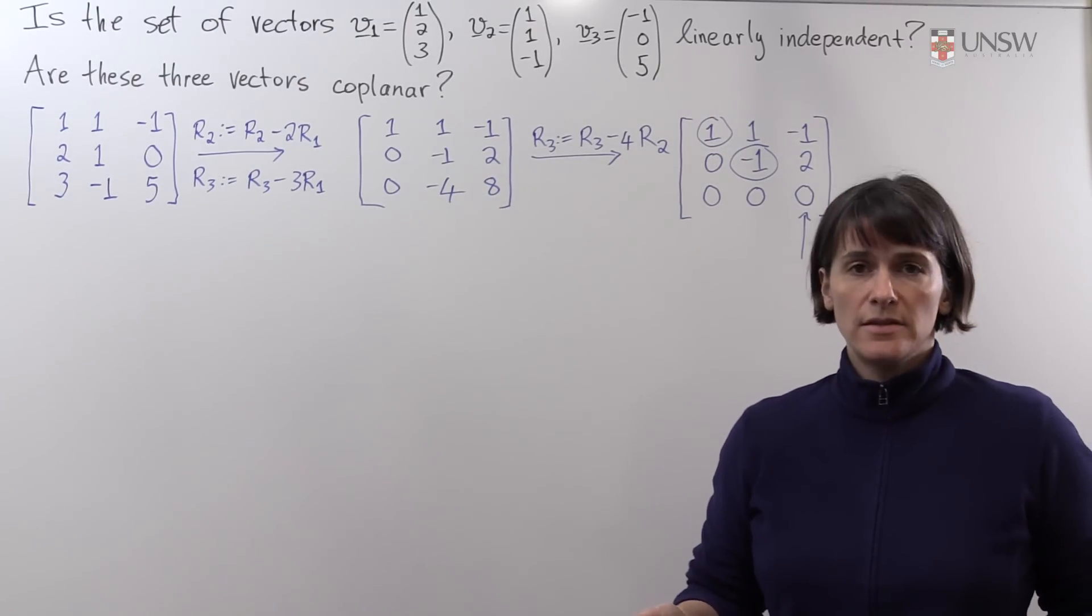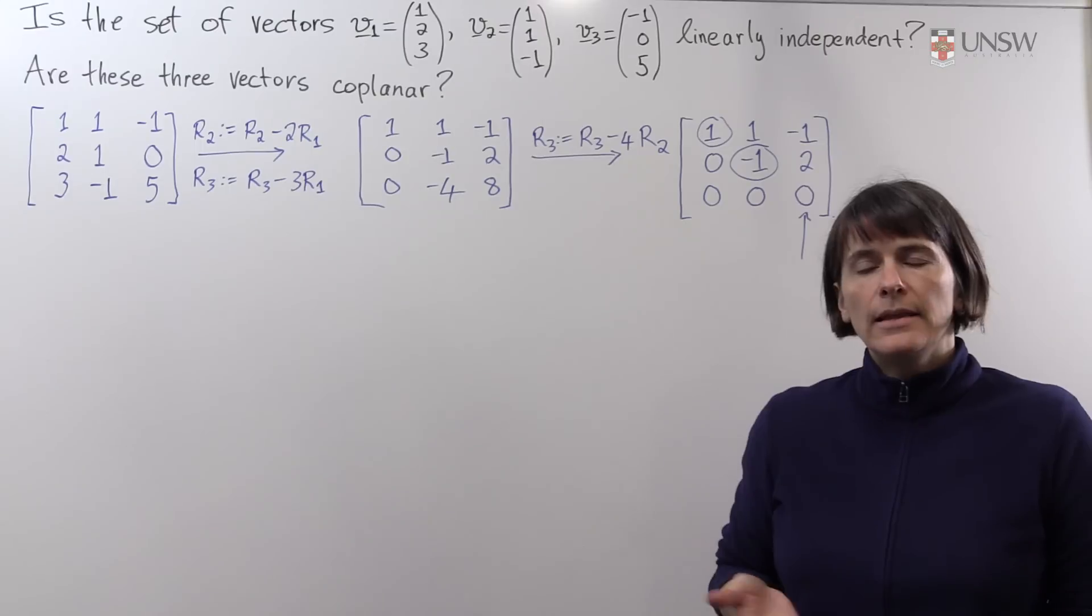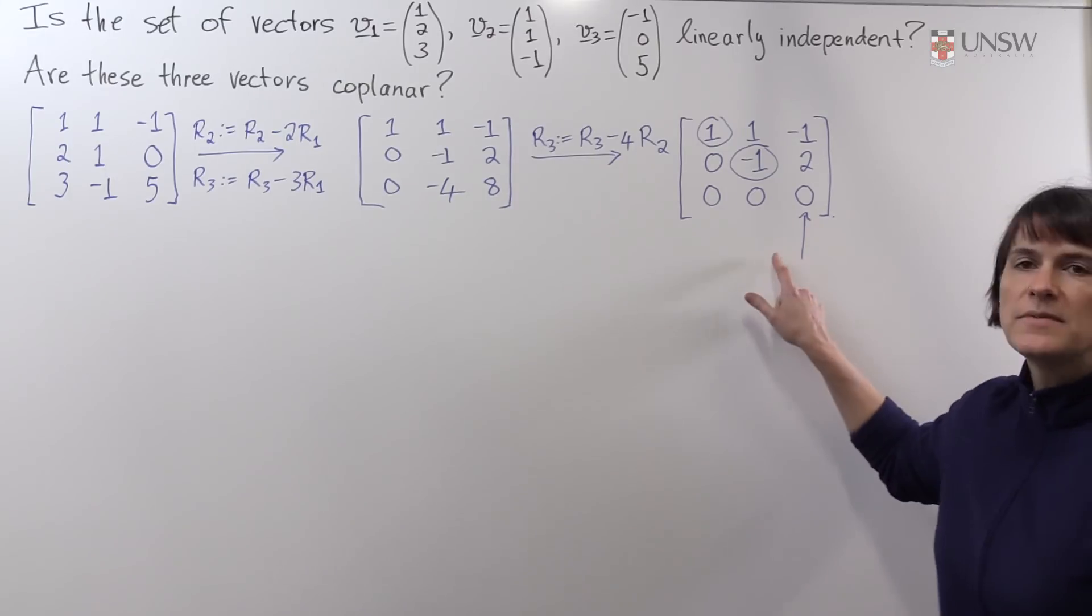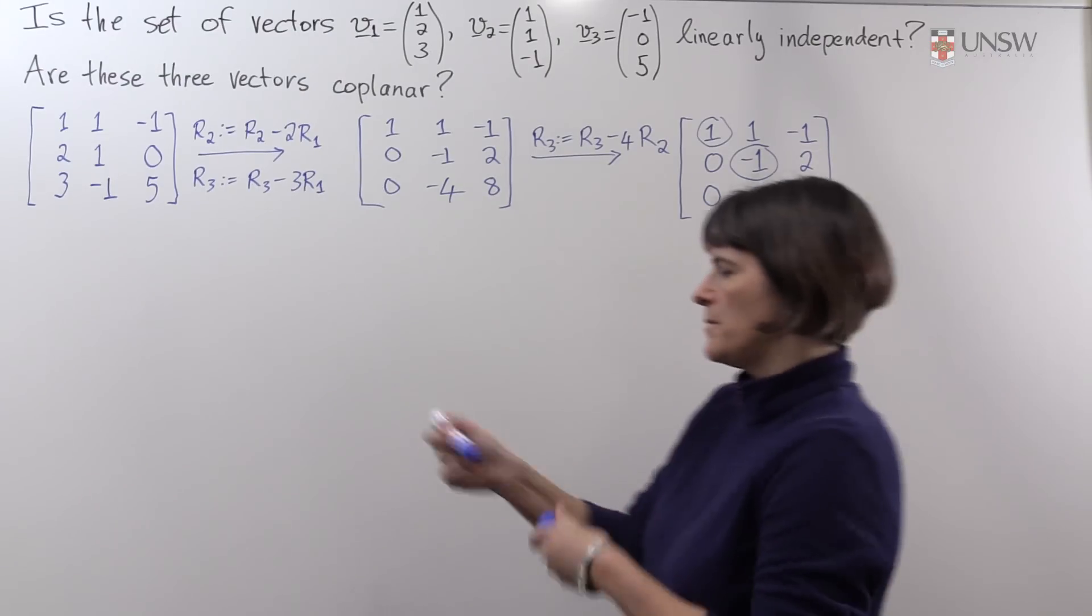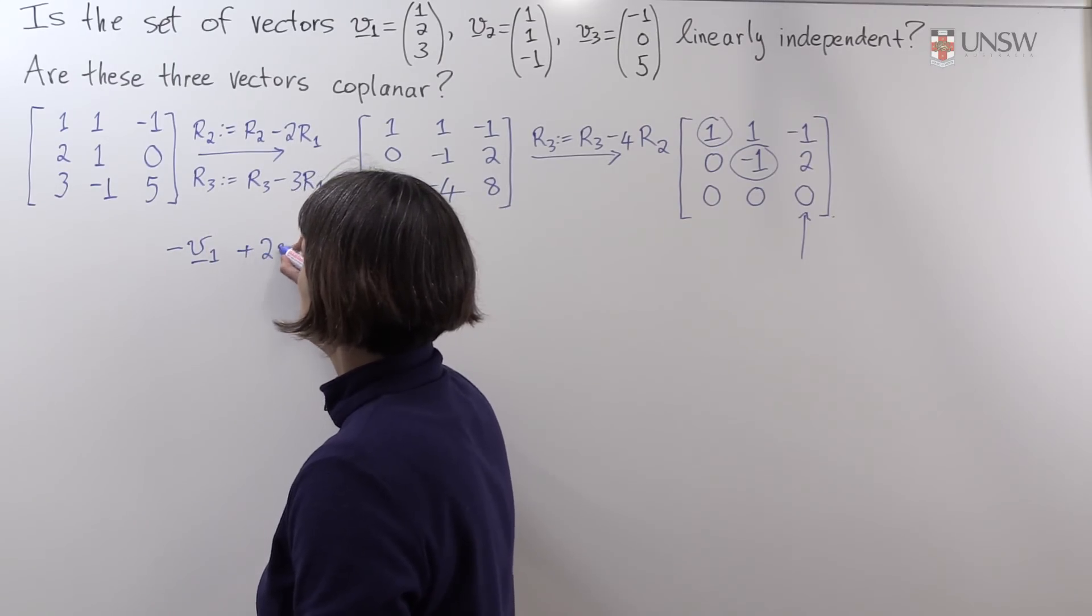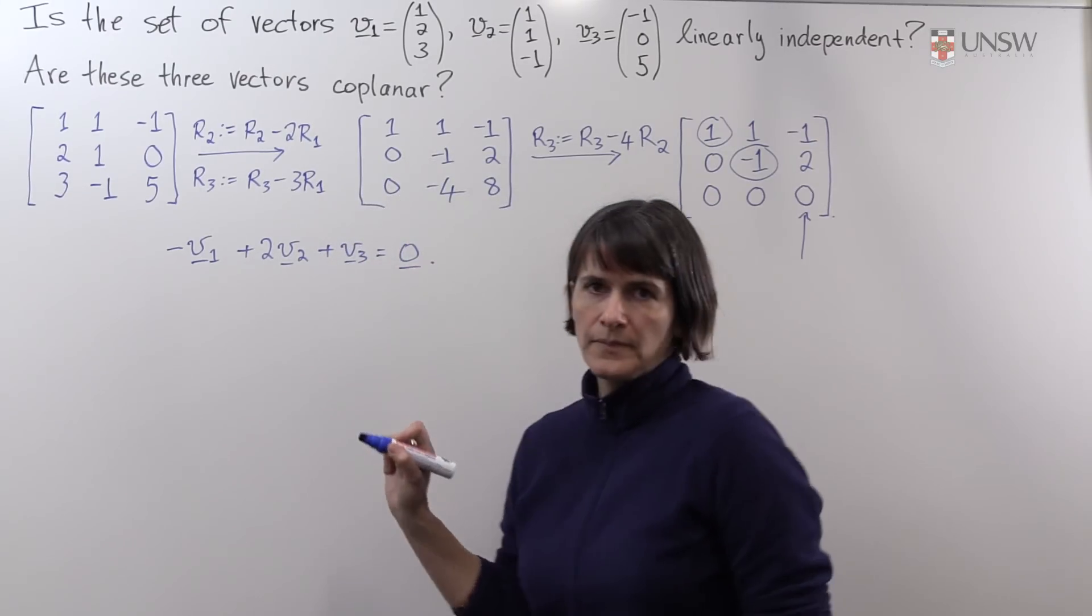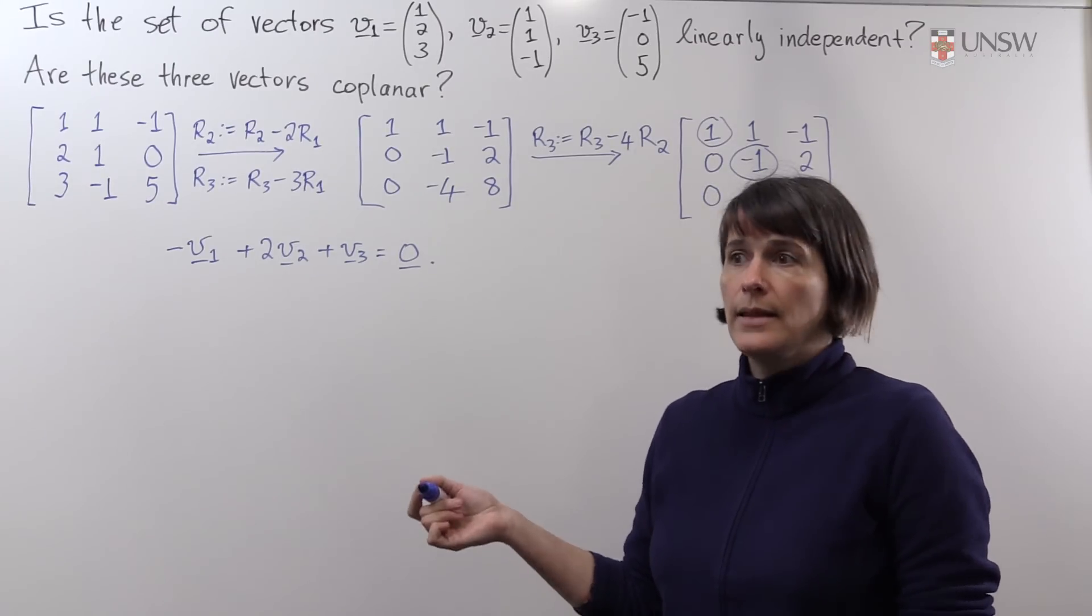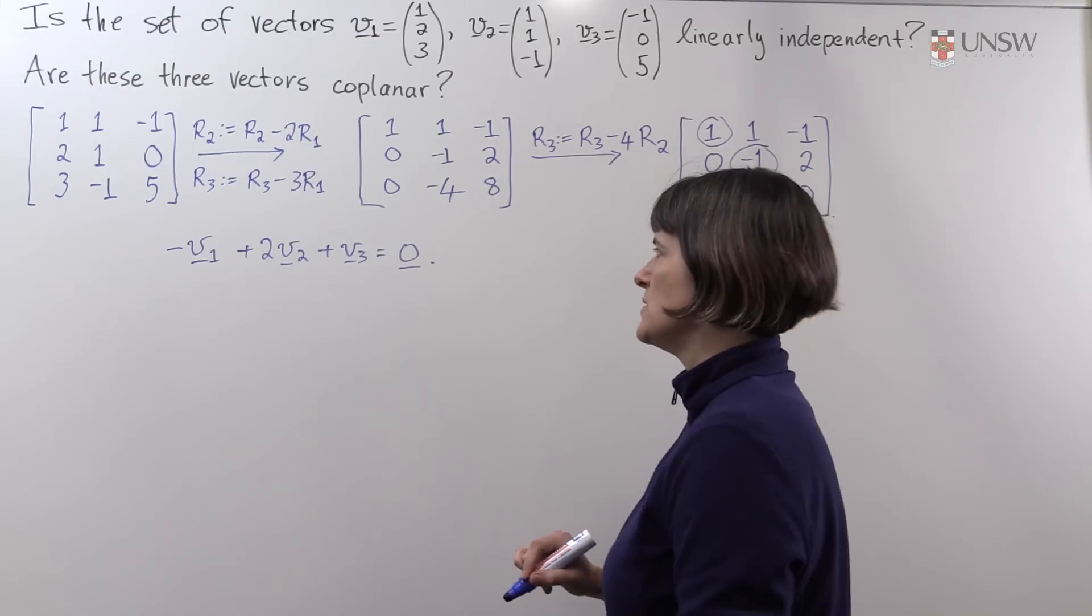So we know that these vectors are coplanar. You can absolutely stop now you've answered that question. But just for our curiosity, let's explore what is the plane that these three vectors lie on. And we're going to obtain this from solving this system of equations. Using back substitution, you can find a solution that looks like this. Minus V1 plus 2V2 plus V3 equals 0. So that's a solution that shows, in particular, V1, V2, V3 are linearly dependent. But what does this tell us about the plane that they all live on, which is making them coplanar?